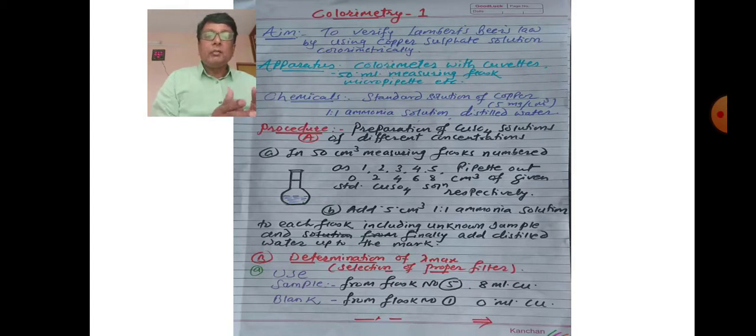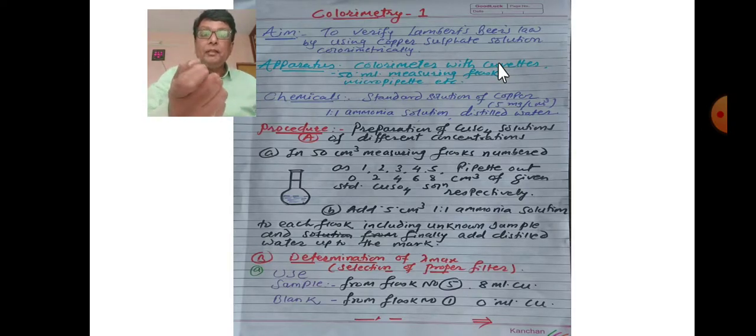Apparatus: colorimetry instrument with cuvettes, test tubes, 50 ml measuring flasks, micropipette, etc. Chemicals: standard solution of copper sulfate - 5 milligram percent per ml, one-to-one ammonia solution, and distilled water.